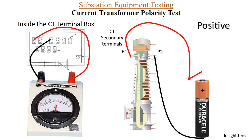Whenever the ratio is connected at 600/1, we connect 1S3 to the negative terminal and 1S1 to the positive terminal. When P1 is connected, the deflection will be on the positive side — confirming that with this ratio also the CT polarity test result is positive.